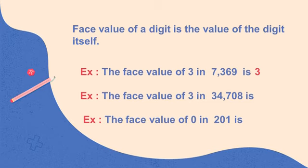Second example: the face value of 3 in 34,708 is 3 itself. In the first example, 3 is in the hundreds place; in the second example, 3 is also in the ten-thousands place. But even though the position differs, the face value remains the same. Third example: the face value of 0 in 201 is 0, because the digit itself is 0.